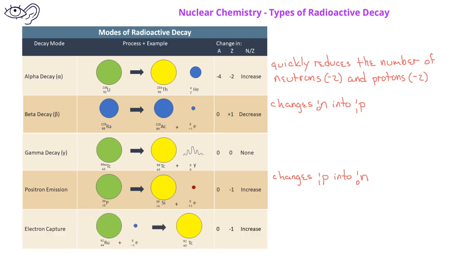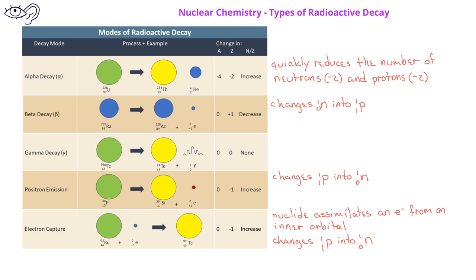Finally, we can have electron capture. In electron capture, a nuclide assimilates an electron from an inner orbital, and in the process changes a proton into a neutron. For example, ruthenium-92 captures an electron from an inner orbital to form the daughter nuclide technetium-92. In electron capture, there is no change in the mass number, although the atomic number decreases by 1. Overall, the ratio of neutrons to protons increases.